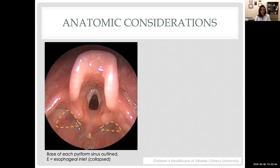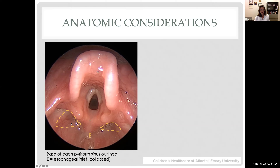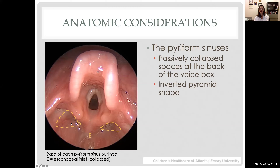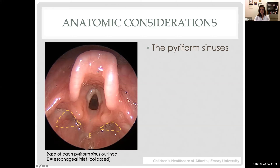The pyriform sinuses are pyramidal-shaped areas of the back of the larynx and hypopharynx that serve as part of the funneling mechanism for food and liquids during swallowing. In these patients, at the inferior portion there is not just a blind pouch but an actual opening of a fistulous tract that extends down into the neck. They're passively collapsed except during swallowing, when the epiglottis flips down and the larynx raises up, sending liquids over the top of the epiglottis into the pyriforms and down the esophagus.